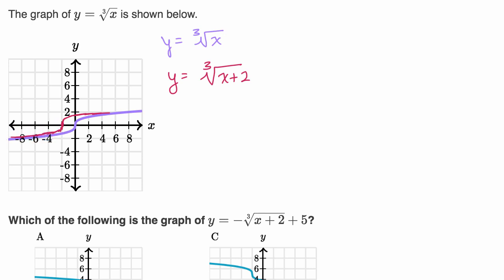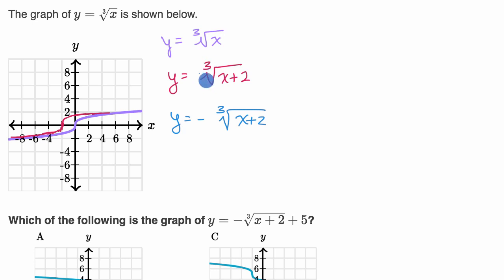Now let's build up on that — let's multiply this by negative one. So y equals the negative of the cube root of x plus two. If you multiply the whole function by a negative, you're going to flip it over the horizontal axis. Whatever y value we were getting before for a given x, we're now getting the opposite — the negative of it. That is y equals the negative of the cube root of x plus two.